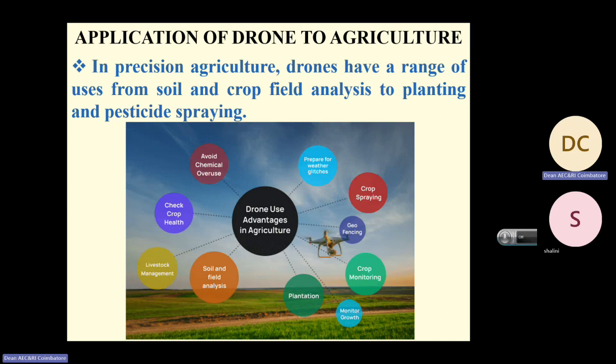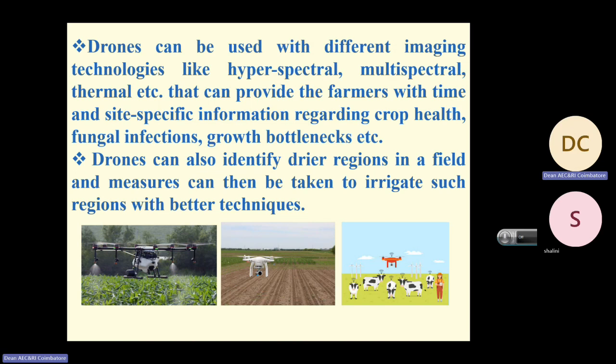Drones have a very good future in agricultural services. Drones can be used with different imaging technologies like hyperspectral, multi-spectral, thermal, etc., to provide farmers with time-specific and site-specific information regarding crop health, fungal infections, and growth bottlenecks. Drones can identify drier regions in a field so that measures can be taken to irrigate such regions with better techniques.